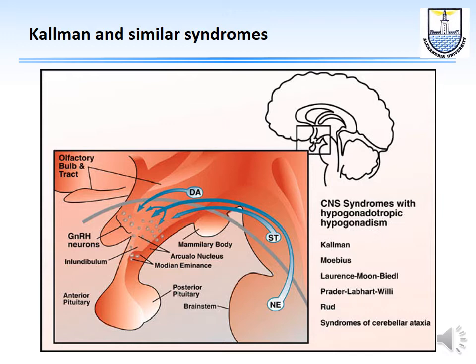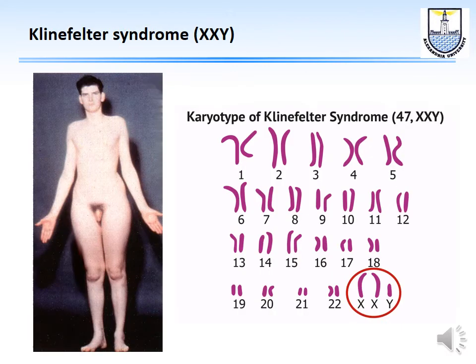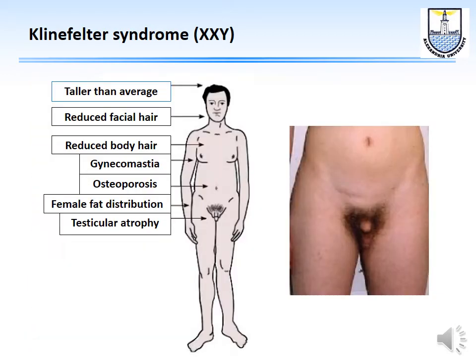Klinefelter syndrome is characterized by trisomy at the sex chromosomes — the phenotypic male has 47 chromosomes, XXY. Some of these men have islands of sperm production in their testes. Clinically they are taller than average, have reduced facial and body hair, some gynecomastia, sometimes osteoporosis, female fat distribution, and testicular atrophy. Some patients can achieve pregnancy through ICSI using their testicular sperm.